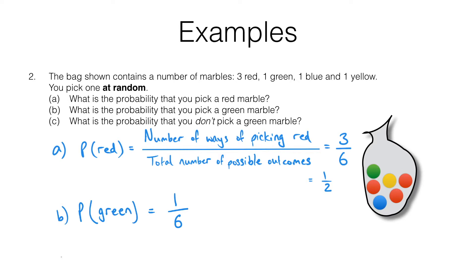In part C we're looking for the probability of not picking a green marble — the probability of 'not green'. There are five marbles that are not green, so there are five ways that event can occur out of a total of six possible outcomes. The probability of picking something that's not a green marble is five sixths.